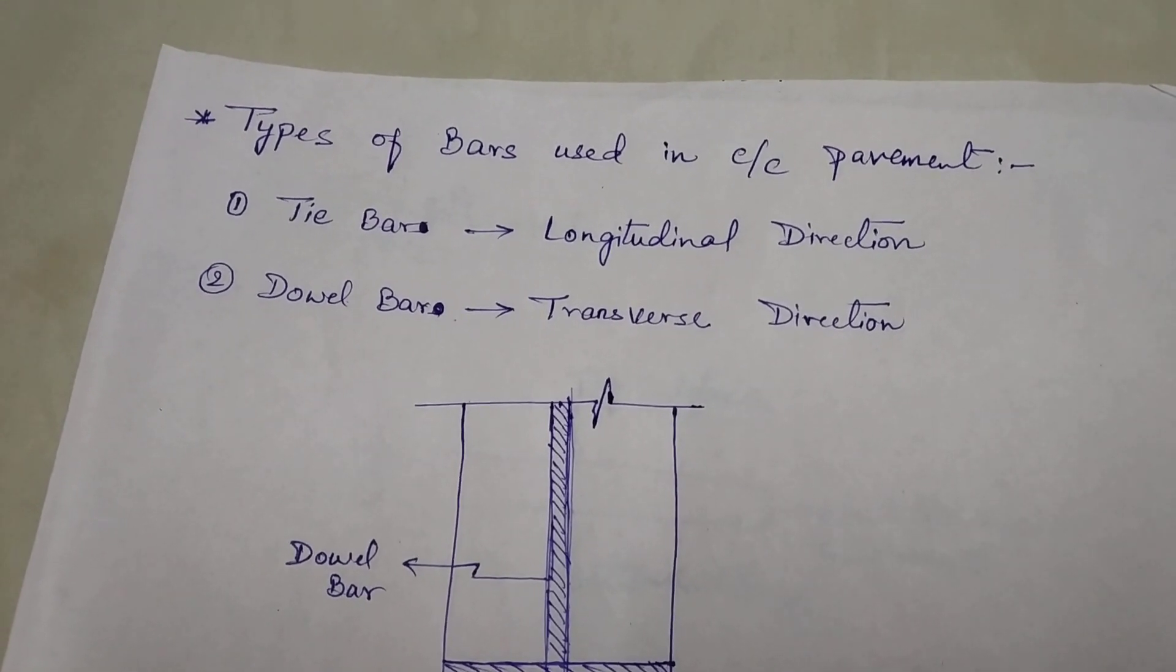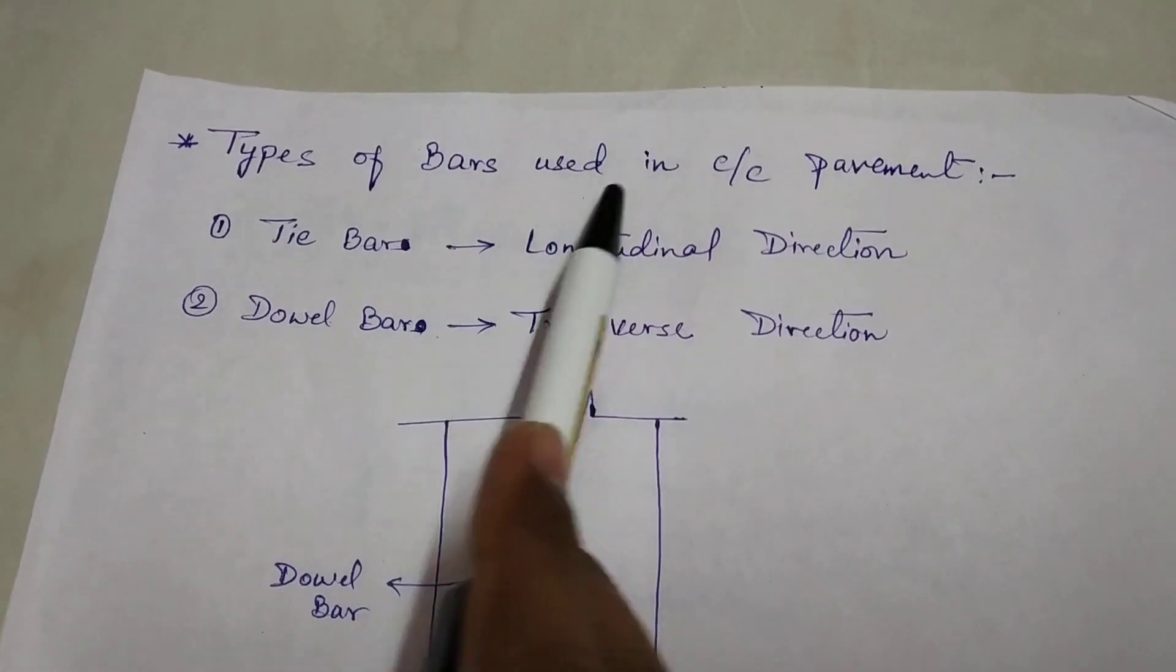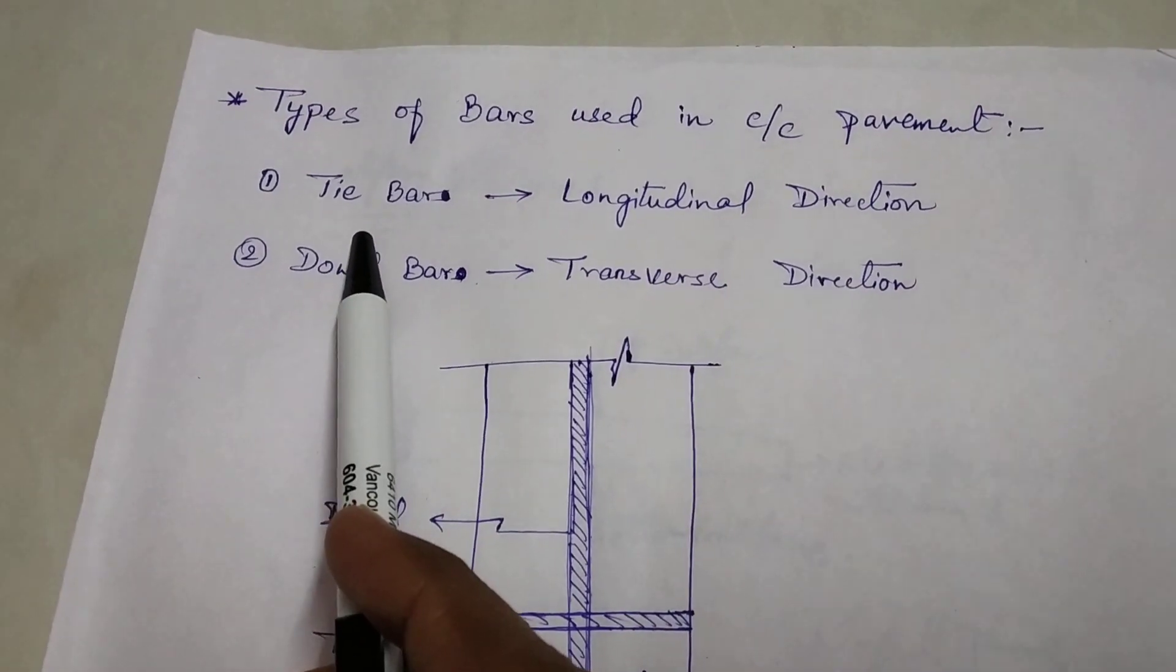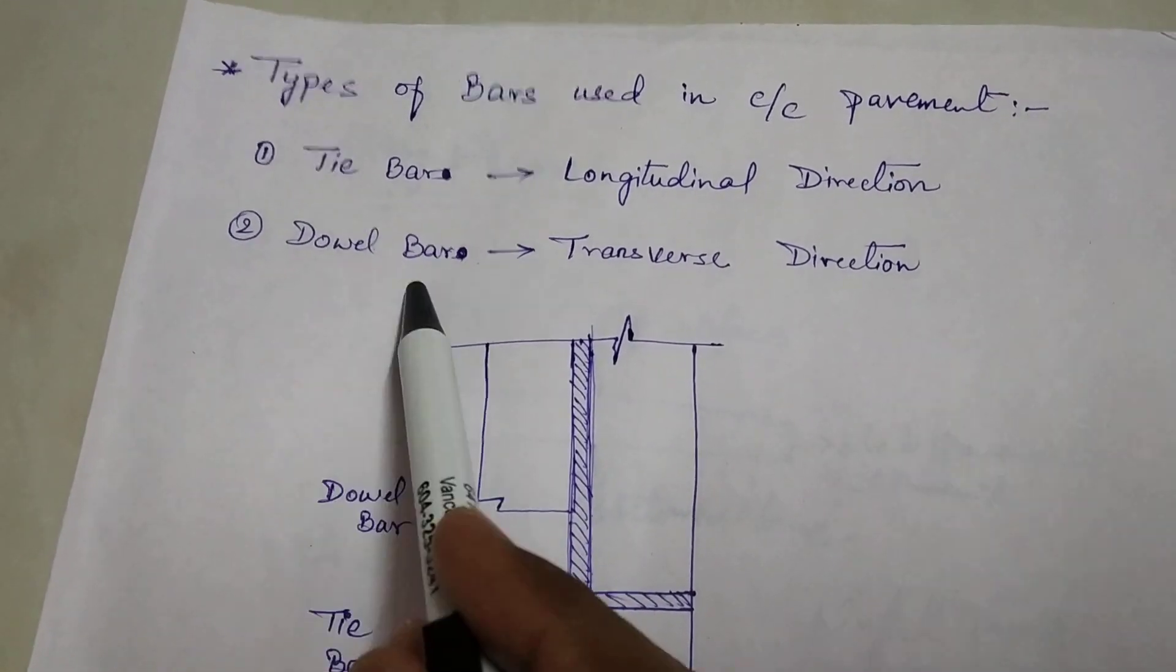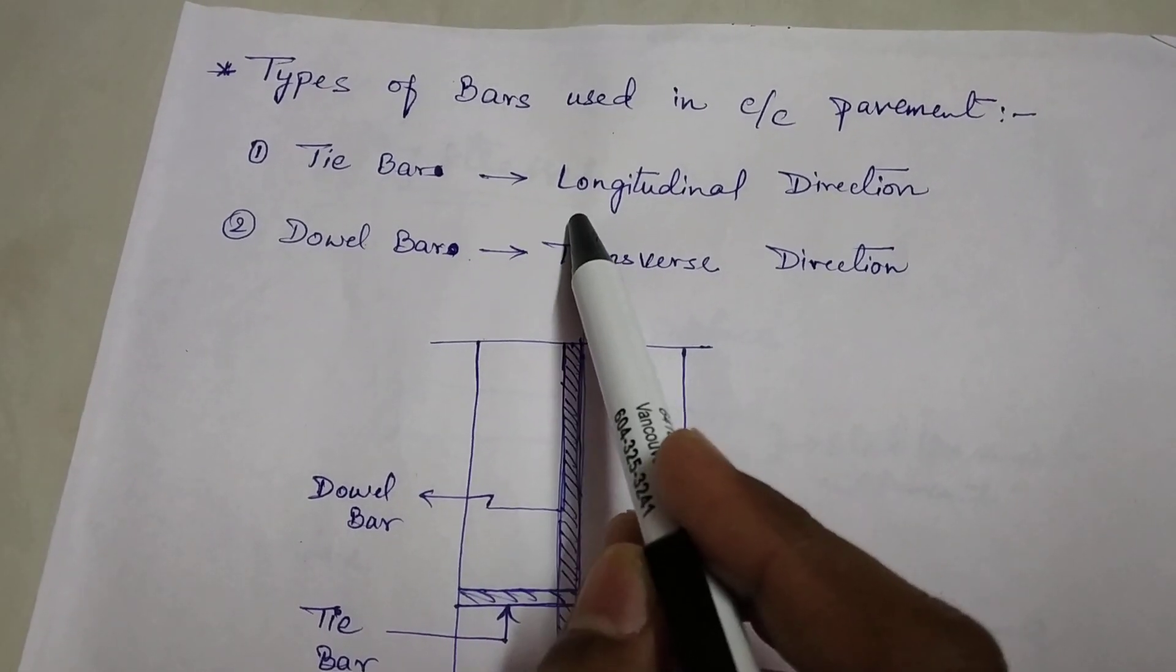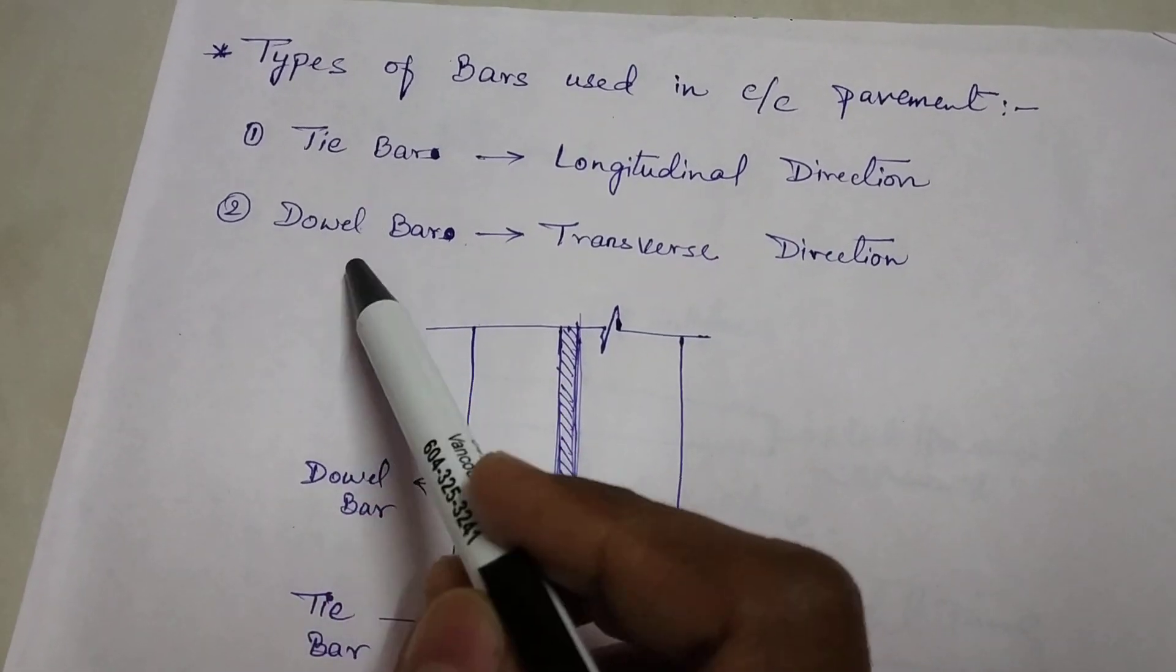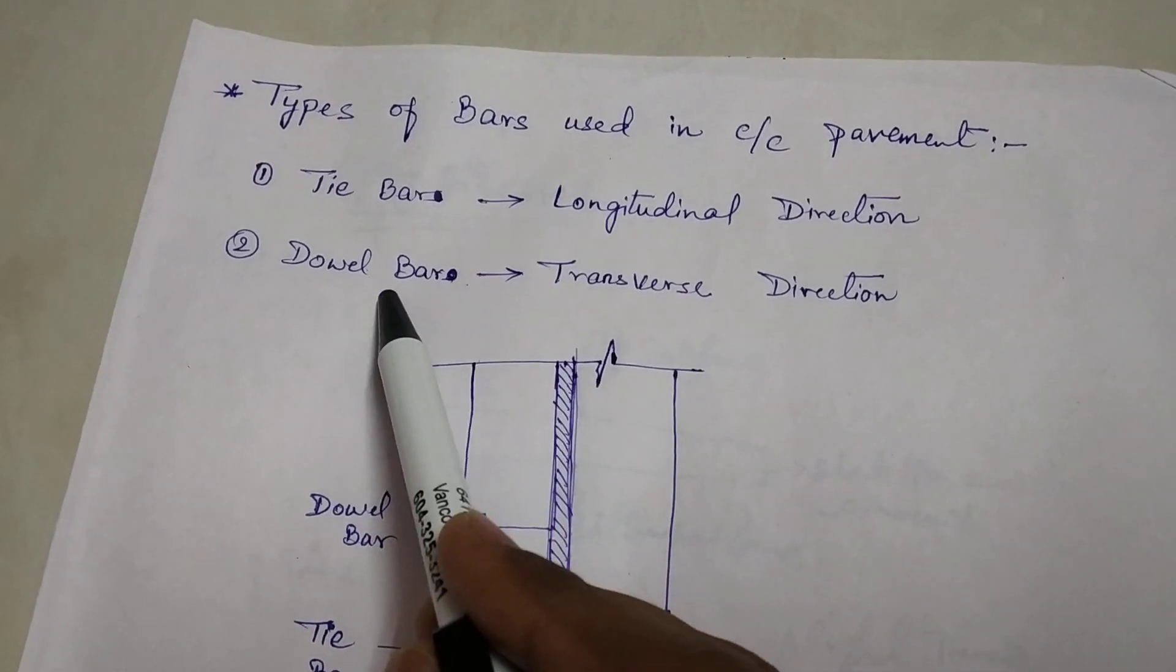First of all we need to know about the types of bars which are used in CC pavement or in rigid pavement. The different bars used are tie bar and dowel bar. How we can differentiate these two? The bars which are placed in the longitudinal direction of the pavement is termed as tie bar and the bar which is placed in the transverse direction of the pavement is termed as dowel bar.